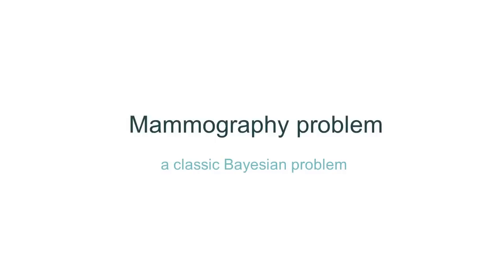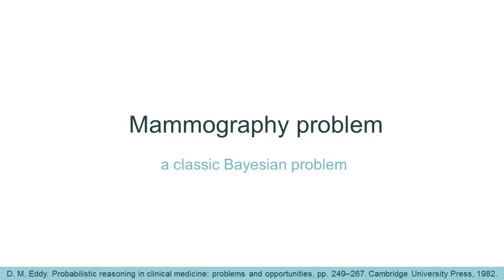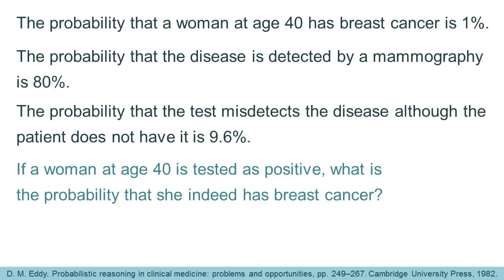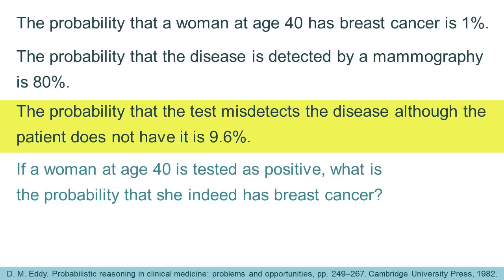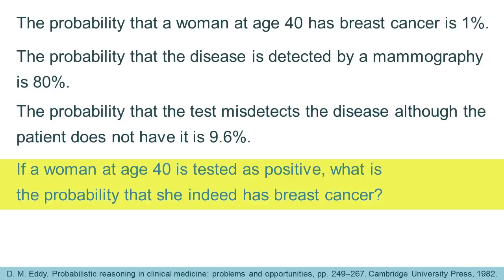Let's consider the classic mammography problem, as it appeared in Eddie's article in 1982. The probability that a woman at age 40 has breast cancer is 1%. The probability that the disease is detected by mammography is 80%. The probability that the test misdetects the disease, although the patient does not have it, is 9.6%. So, if a woman at age 40 is tested as positive, what is the probability that she indeed has breast cancer?